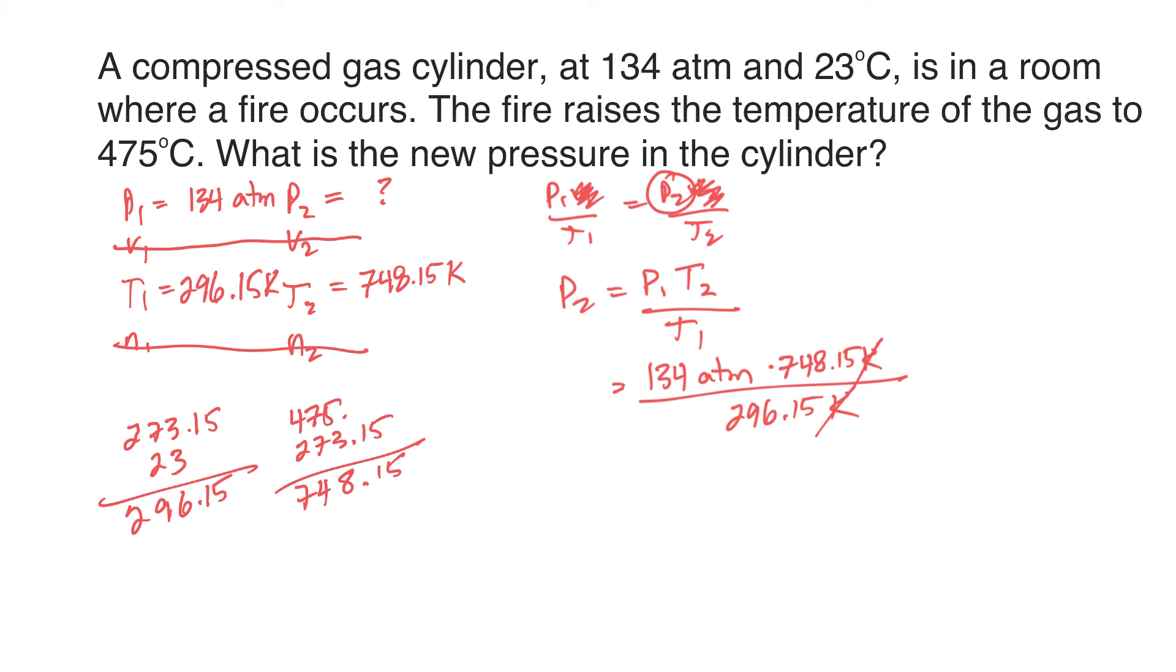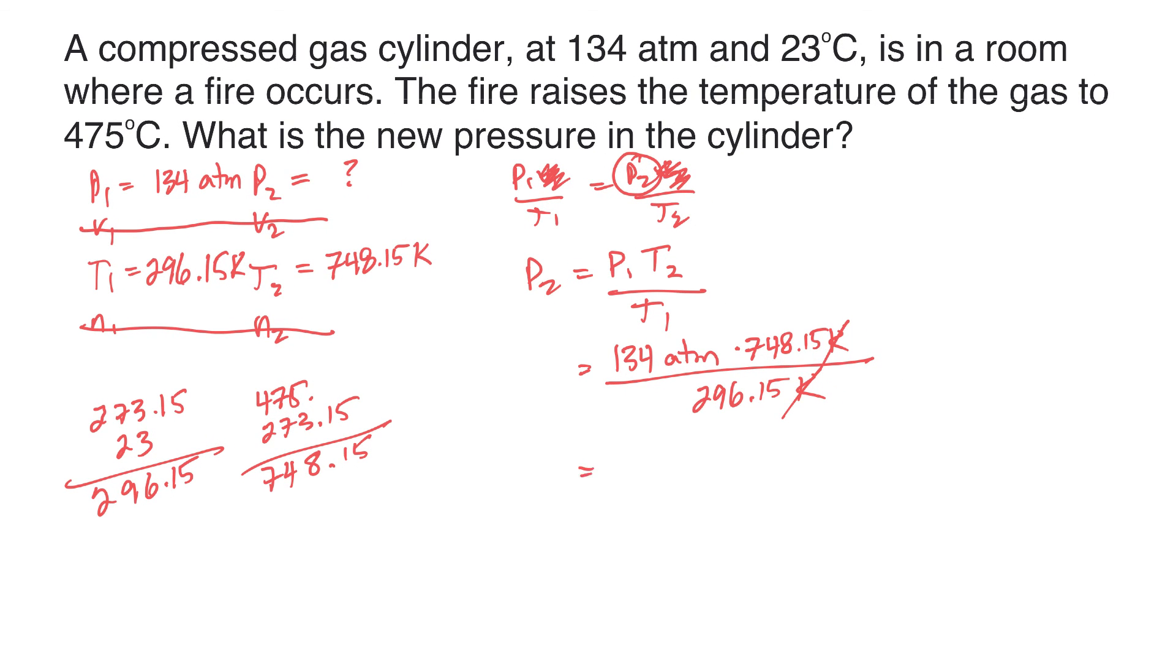Calculator time. So 134 times 748.15 divided by 296.15. So pressure 2 comes to 338.517 atmospheres. That's a crazy amount of pressure, lots of pressure. I'm not sure how much pressure one of those things would hold, but that's like one atmosphere is 760 millimeters of mercury. So if you times this by 338, that'll tell you how many millimeters of mercury you have. That's crazy pressure.